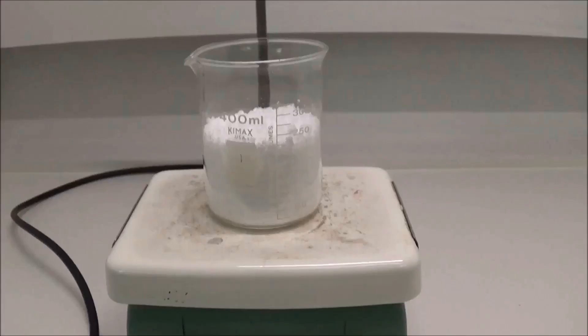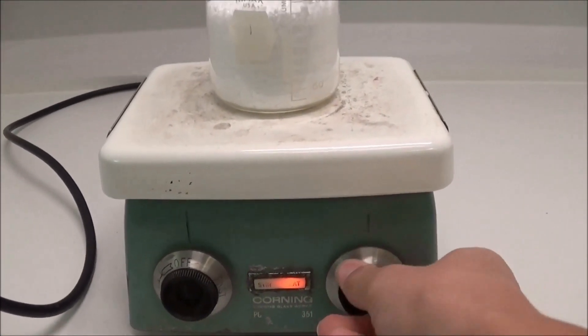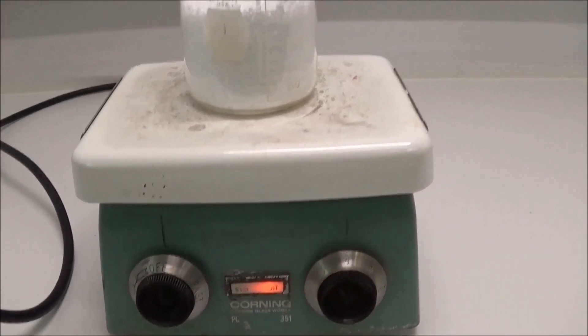The beaker seen here contains approximately 60 grams of phthalic acid. It's placed on a hot plate and the hot plate is turned on to medium-high heat.